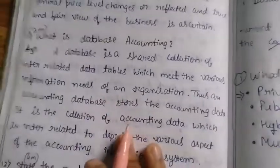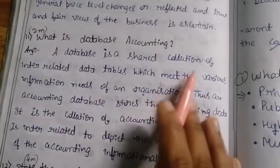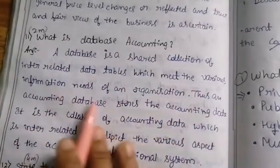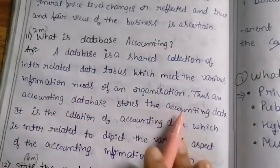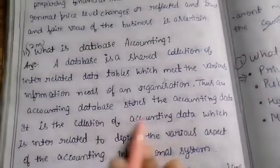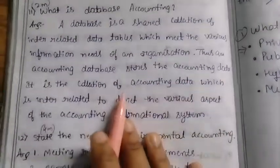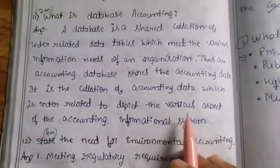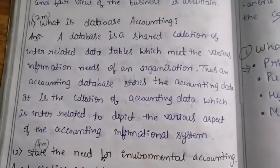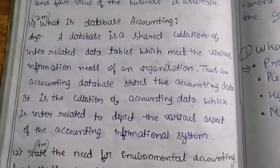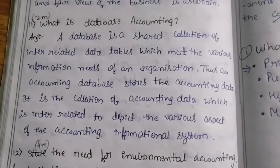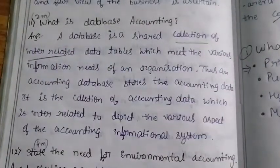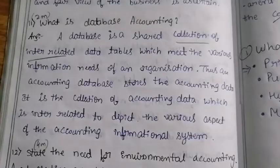What is database accounting? A database is a shared collection of interrelated data tables which meet the various informational needs of an organization. An accounting database stores accounting data — it is a collection of interrelated tables depicting various aspects of the accounting information system.